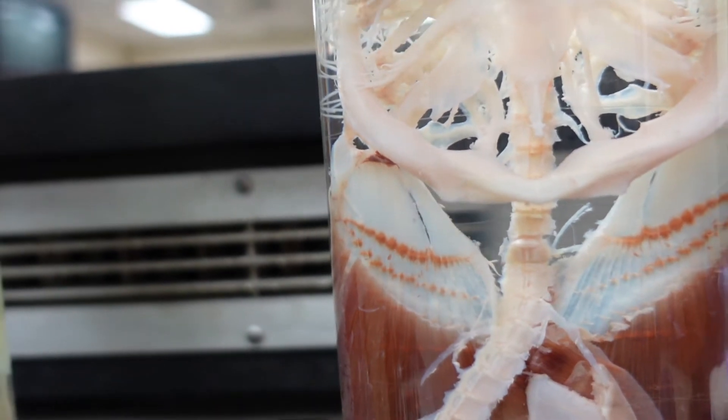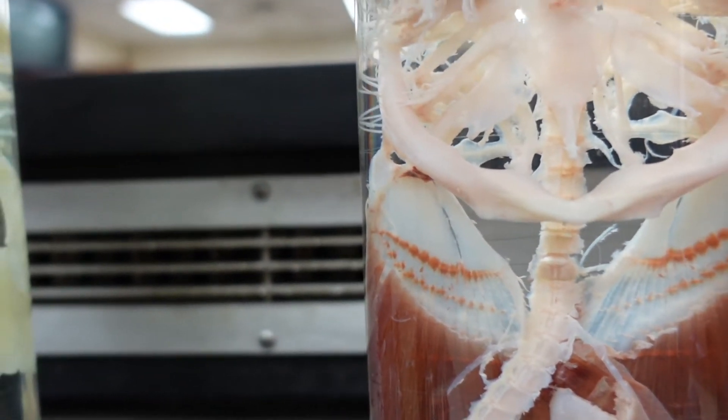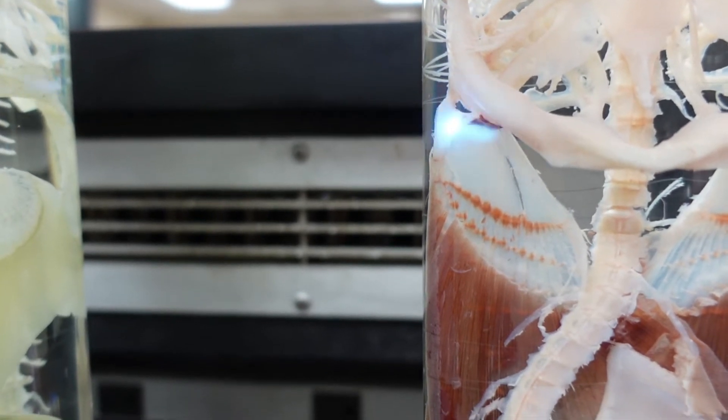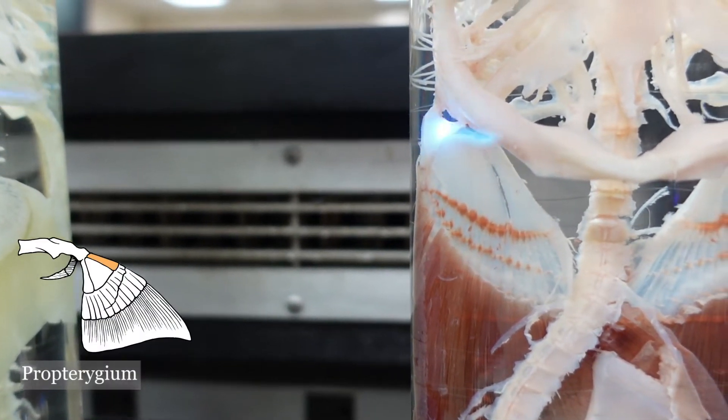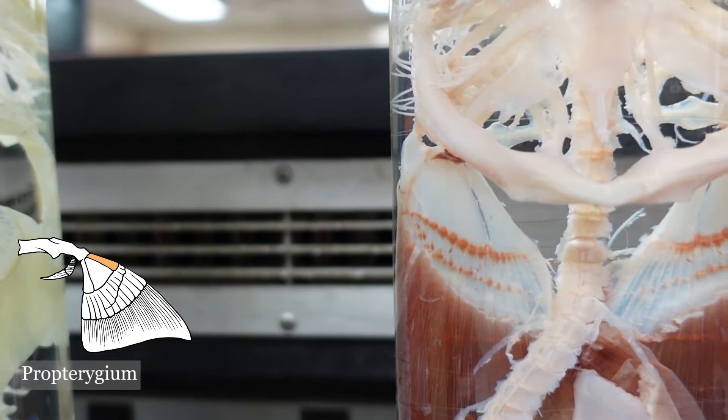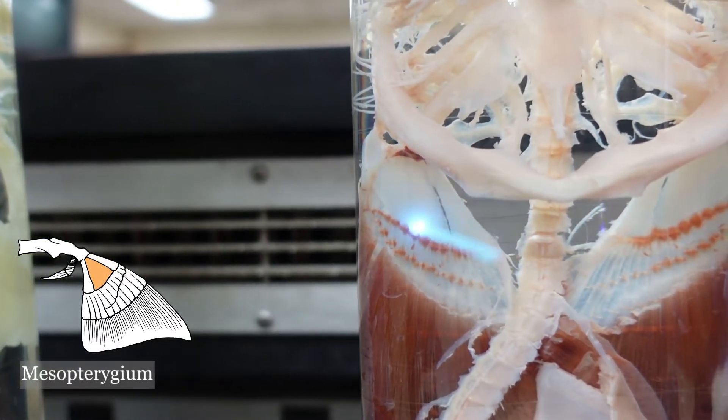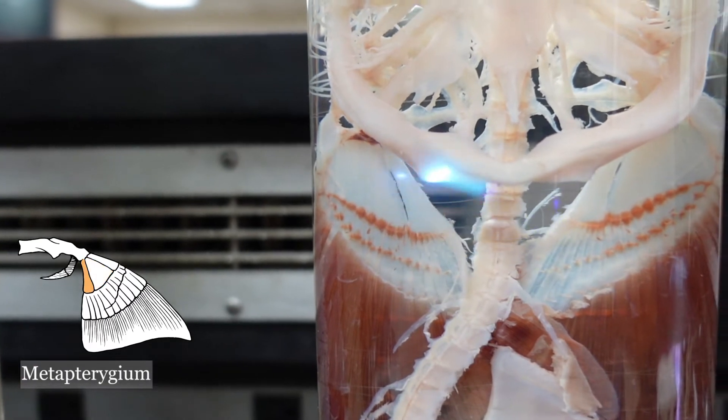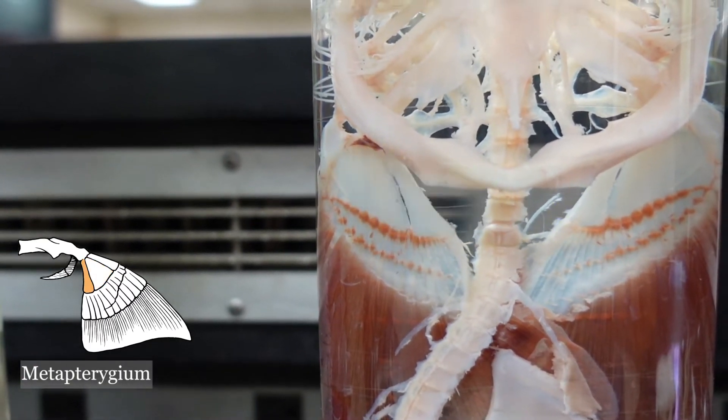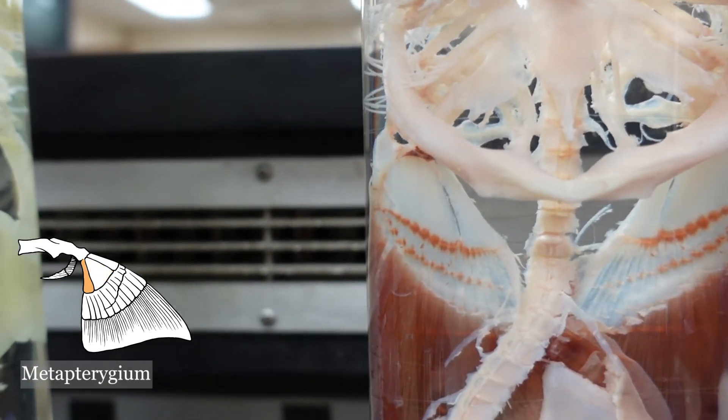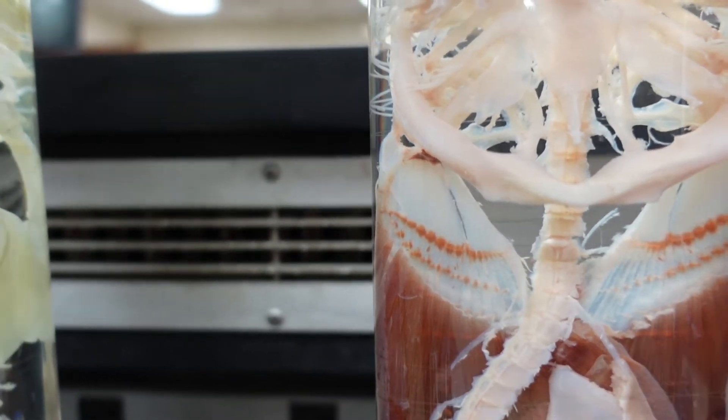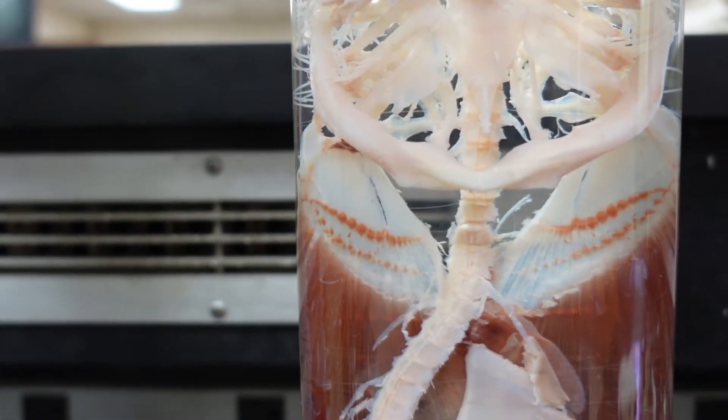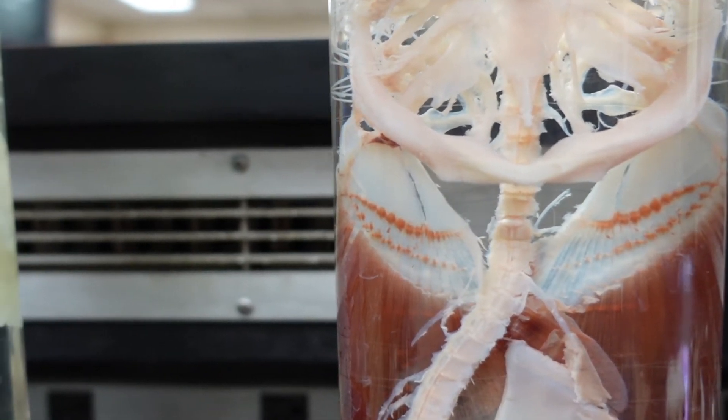In the pectoral fin there are three large cartilages. This is the propterygium (pro meaning before or first), mesopterygium (meso meaning middle), and the metapterygium (meta meaning last). Pterygium effectively means wing. So these are the first, middle, and last part of the wing or pectoral fin.